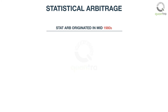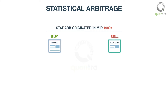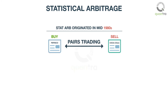The birth of Stat-Arb can be dated back to the mid-1980s. A small group of researchers working at Morgan Stanley created a strategy to buy and sell stocks in a pair. This strategy quickly earned a reputation and was given the name pairs trading.